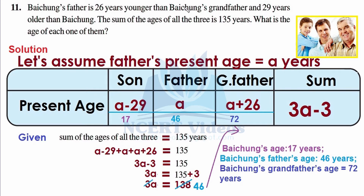Baichung's father is 26 years younger than Baichung's grandfather, meaning the grandfather is 26 years older than his son. And Baichung's father is 29 years older than Baichung, meaning Baichung is 29 years younger than his father. The second statement is simple: the sum of ages of all three is 135 years — Baichung's age plus his father's age plus his grandfather's age equals 135.